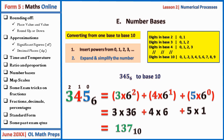If you write the answer without indicating base 10, you are correct, because everything in normal life is in base 10 unless another base is specified. Note: the digits in base two are just zeros and ones. In base three you have zero, one, and two. A number cannot be in base two and contain the digit three. The highest digit in base two is one, in base three is two, in base four is three, and the highest digit in base ten is nine.